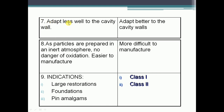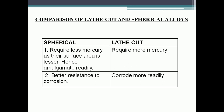Spherical alloys adapt less well to the cavity wall. Lathe cut, with its higher surface area, adapts better to the cavity wall. Spherical particles are prepared in an inert atmosphere — no danger of oxidation — and are easier to manufacture. Lathe cut alloys are more difficult to manufacture. Indications: spherical alloys are used for large restorations, foundations, and pin amalgams; lathe cut alloys are used for Class I and Class II cavities.